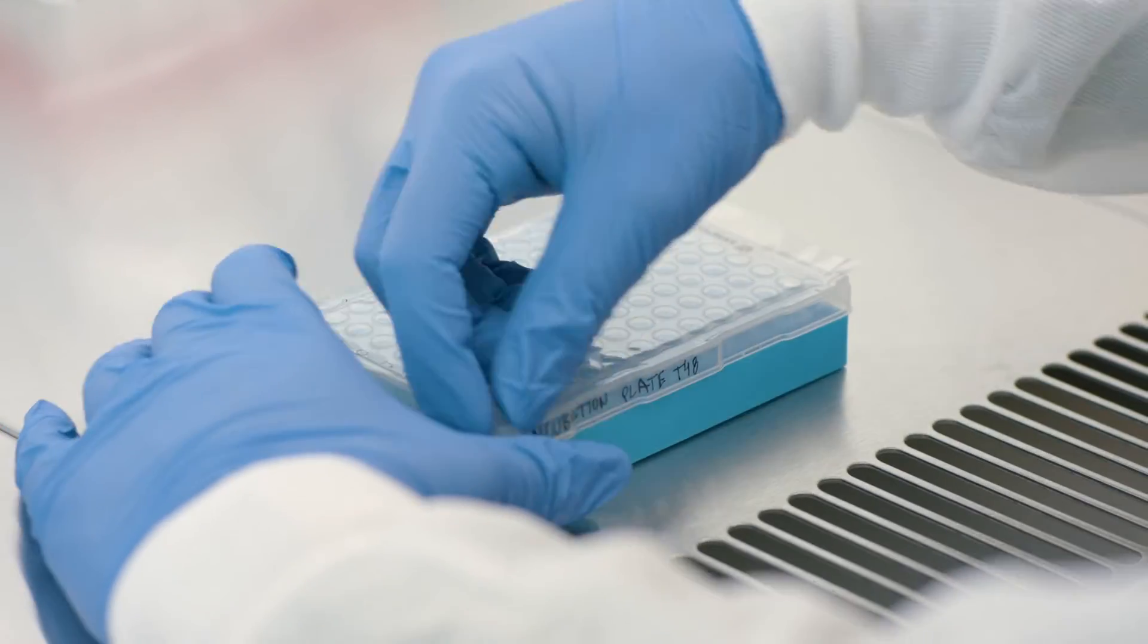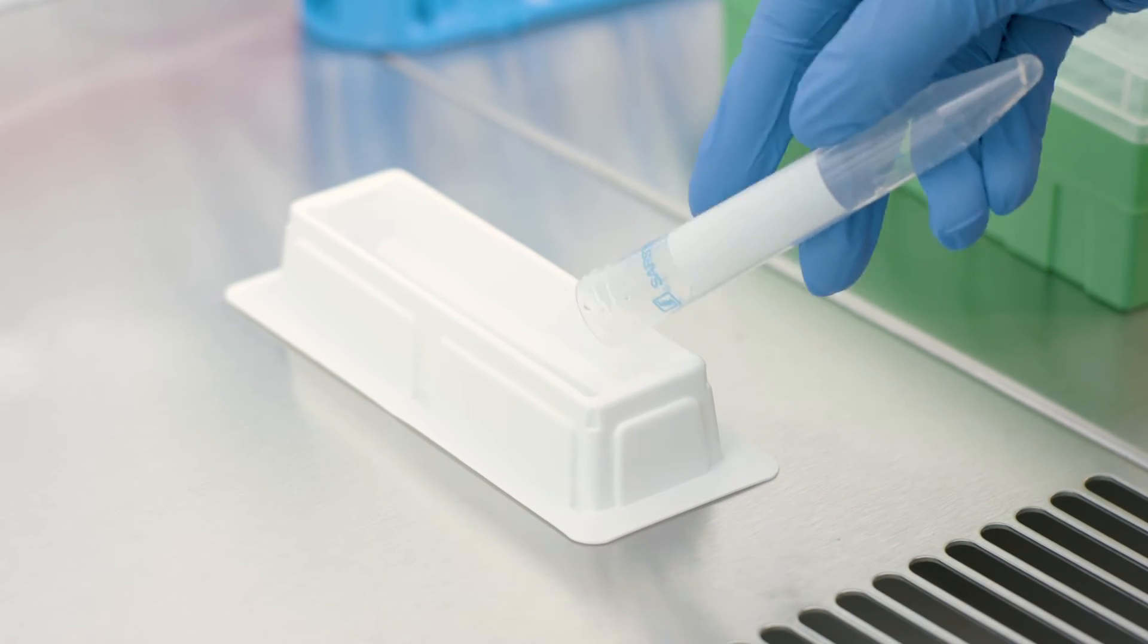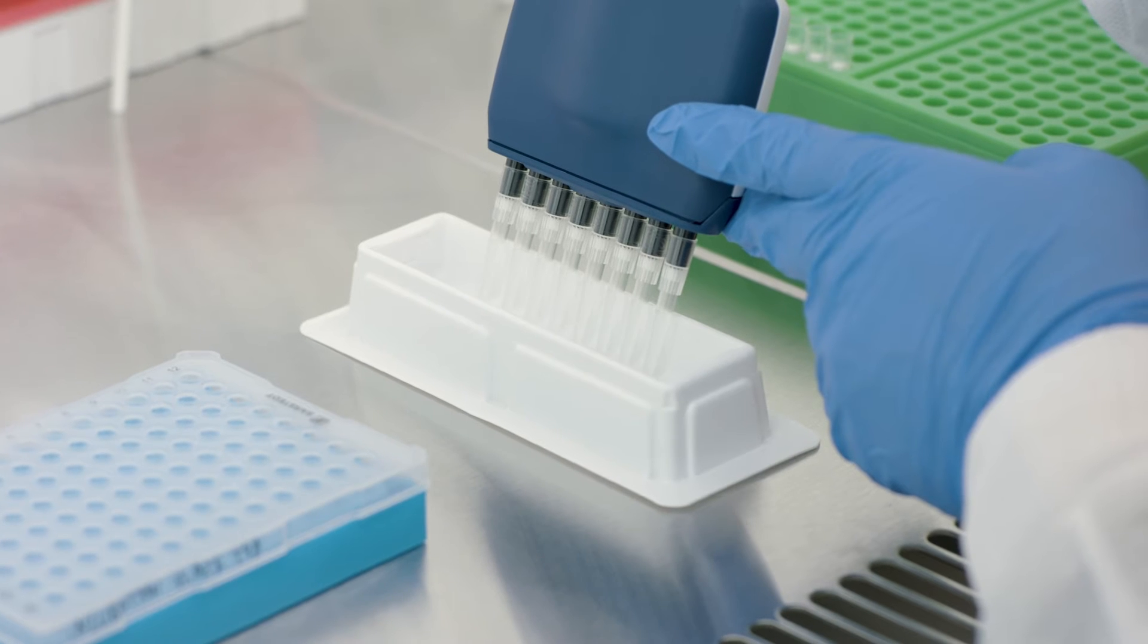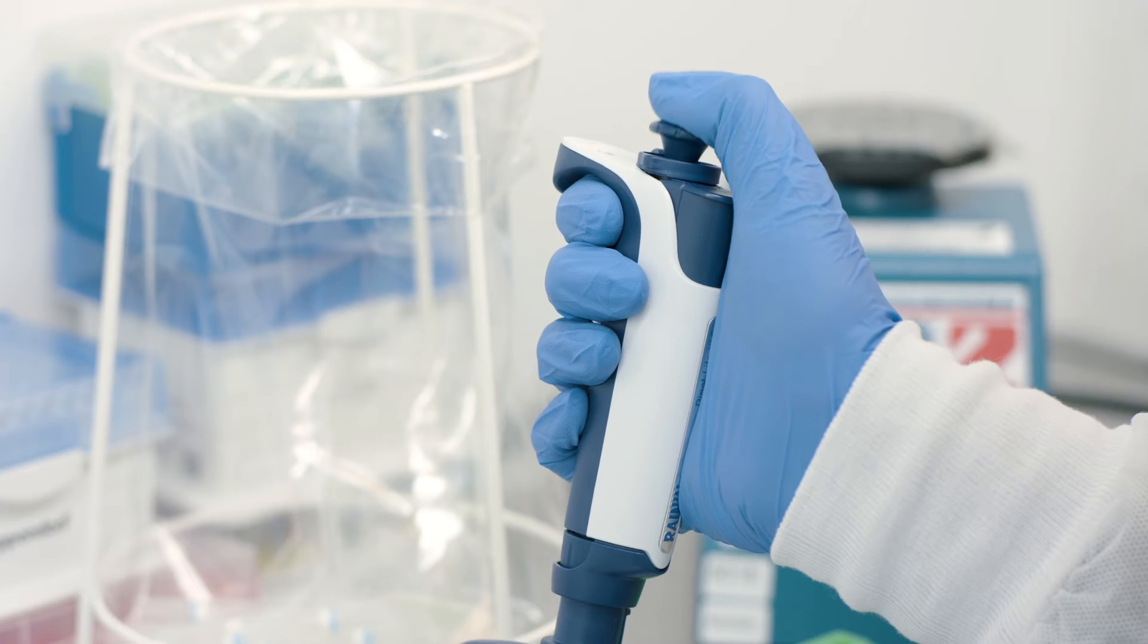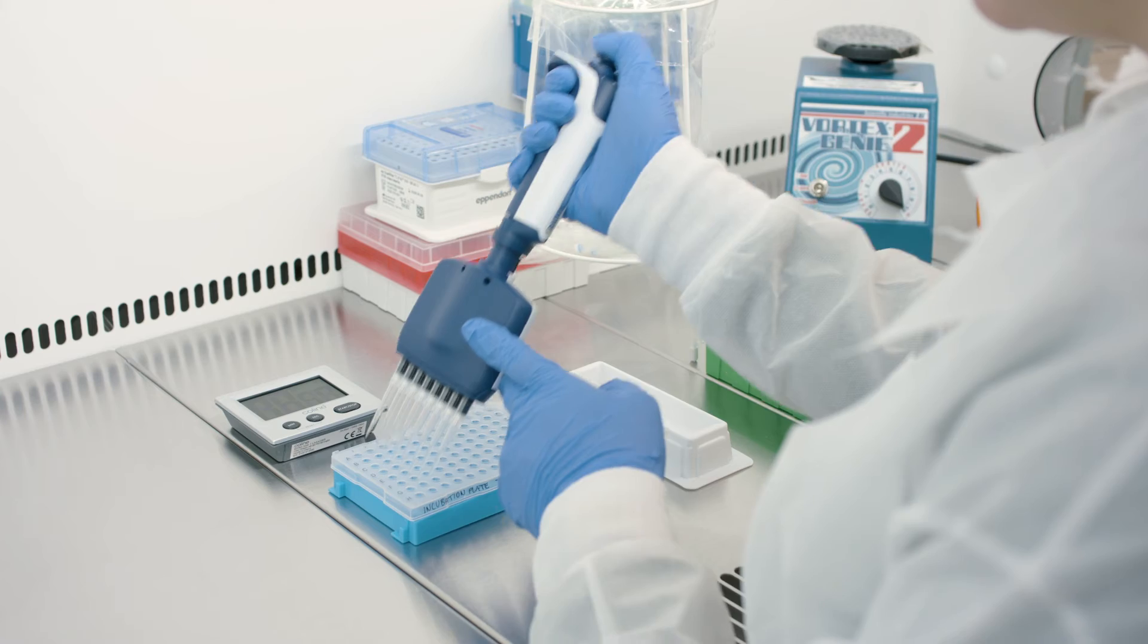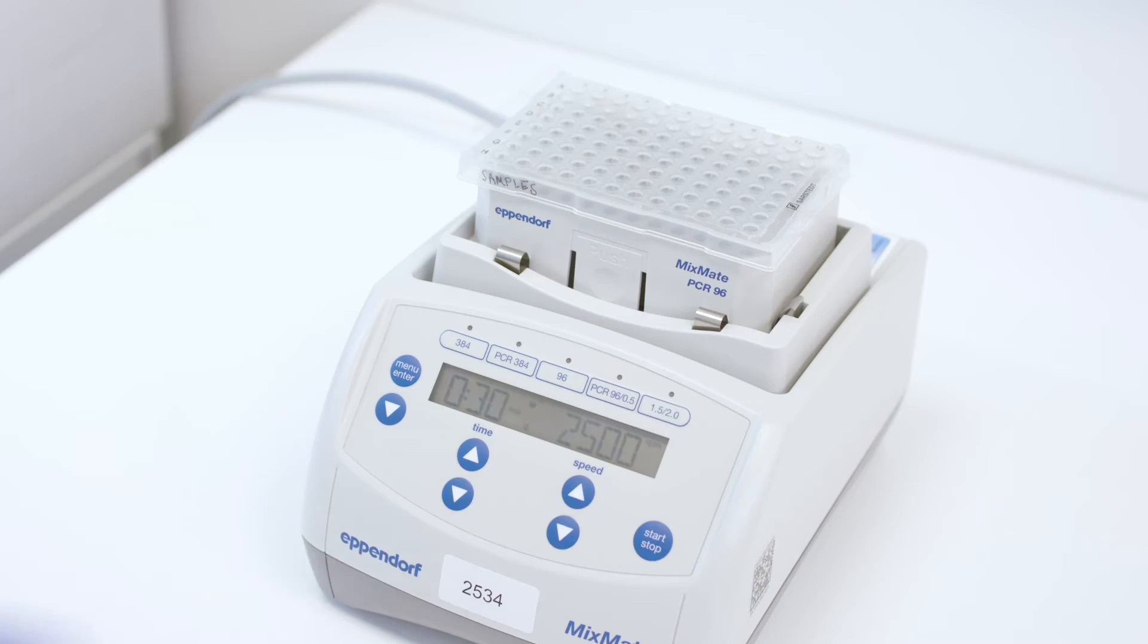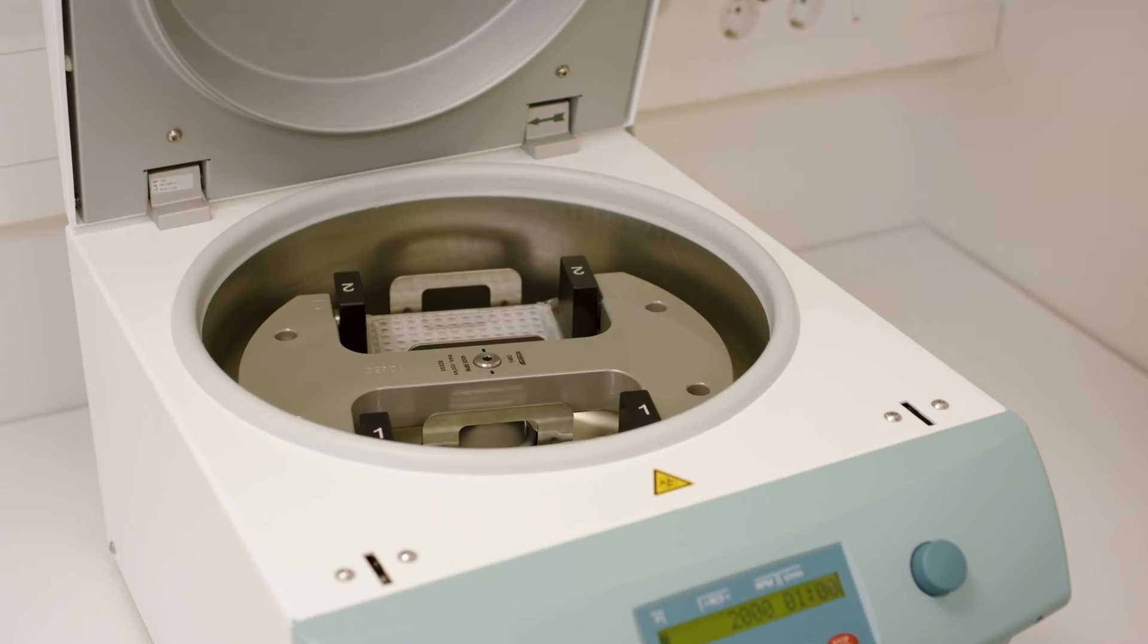Spin down the incubation plate, and carefully remove the adhesive film. Vortex the extension mix, and pour into a multi-channel pipette reservoir. Precondition 200 microliter multi-channel pipette tips using extension mix before proceeding. Use the same pipette tips for the entire plate. Start a timer set for 5 minutes, and transfer 96 microliters of extension mix to the incubation plate using reverse pipetting. Seal the plate with a new adhesive plastic film, and vortex thoroughly to ensure all wells are mixed, before spinning it down for use in the next step.